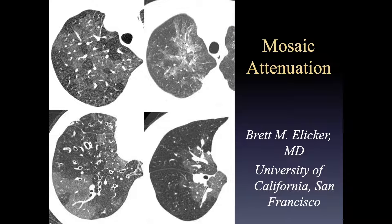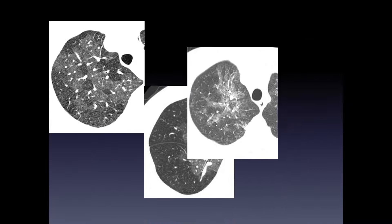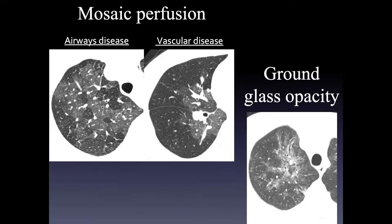Let's start with terminology. Mosaic attenuation refers to heterogeneous lung density with two densities of lung, either opaque or lucent. The first question when dealing with cases of mosaic attenuation is which lung is abnormal. If the more opaque lung is abnormal, we describe that as ground glass opacity. If the more lucent lung is abnormal, we describe that as mosaic perfusion.